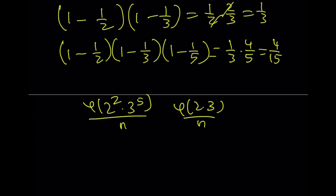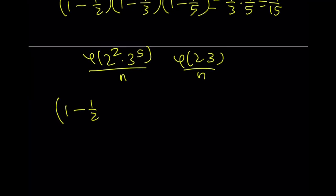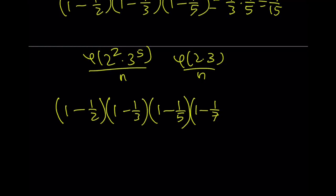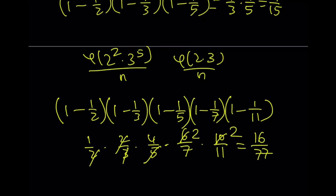Continuing the product with more primes: including 7 gives 6/7, and including 11 gives 10/11. So the full product through 11 is (1/2)(2/3)(4/5)(6/7)(10/11). Simplifying by cross-canceling — 3 goes into 6 twice, 5 goes into 10 twice — we get 16/77. Notice that 16/77 is greater than 16/80, which equals 1/5. So our product is still not less than 1/5.